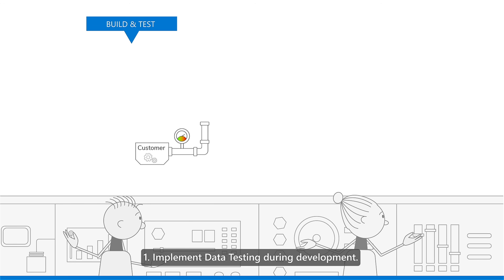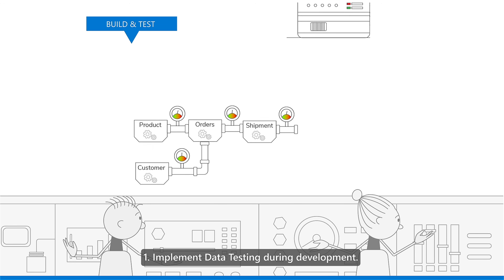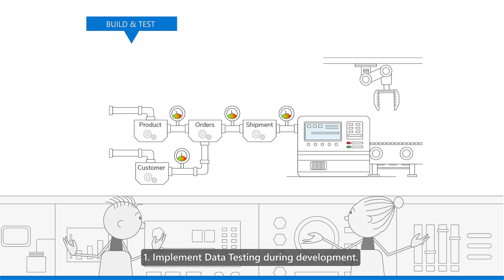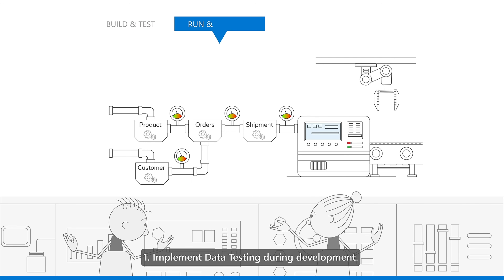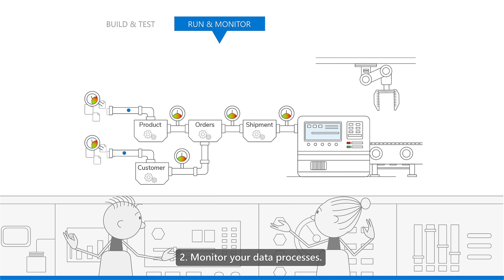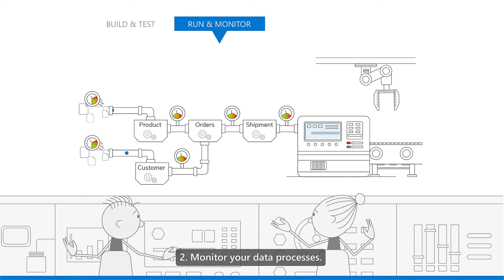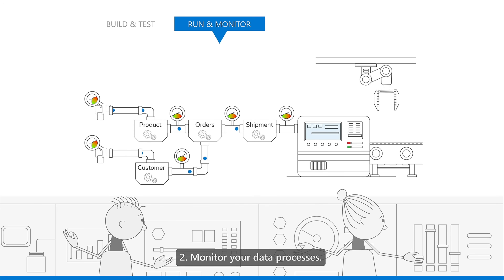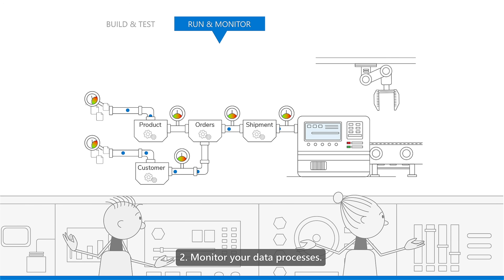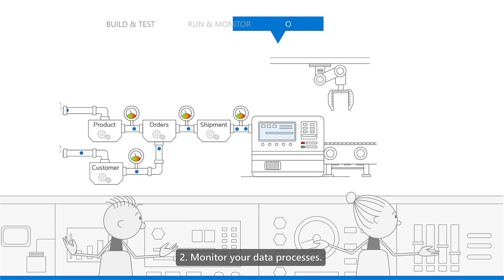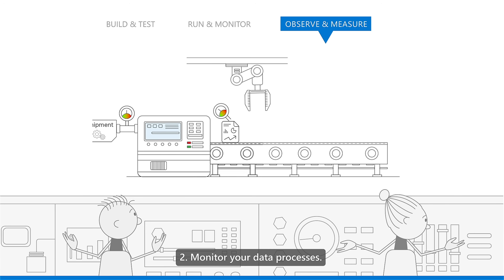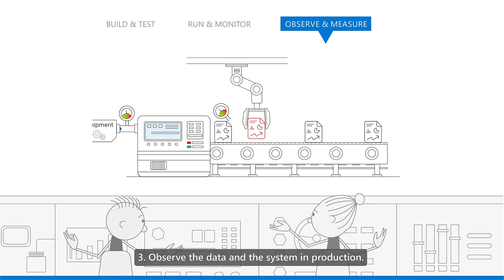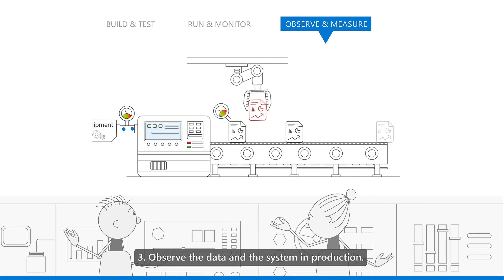1. Implement data testing during development. 2. Monitor your data processes. 3. Observe the data and the system in production.